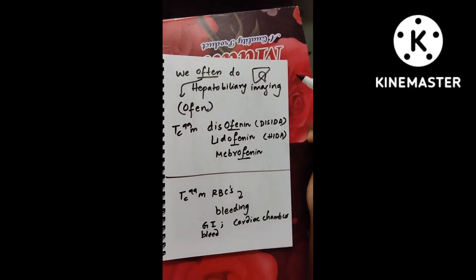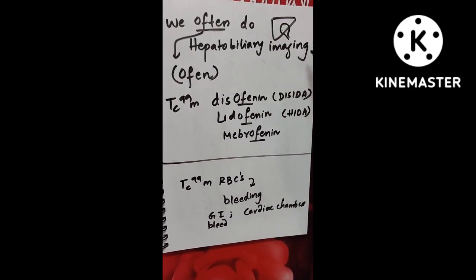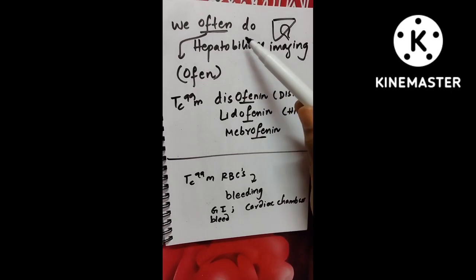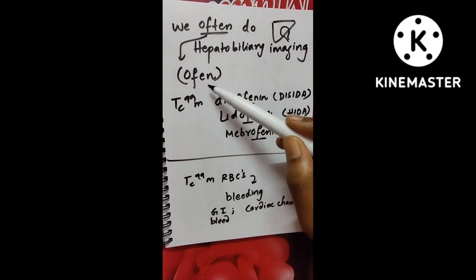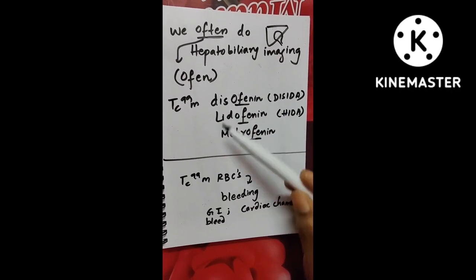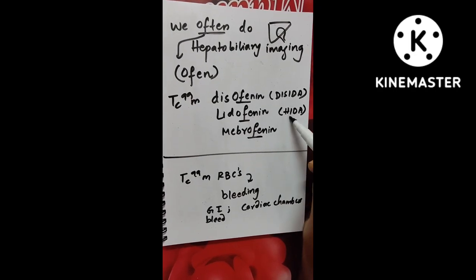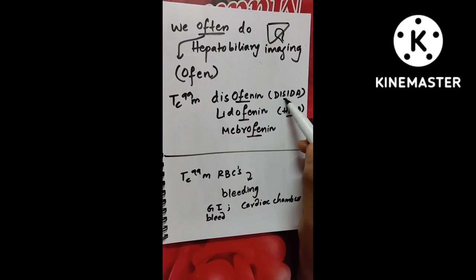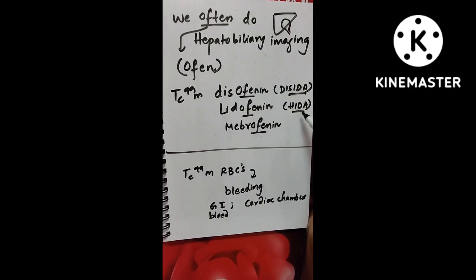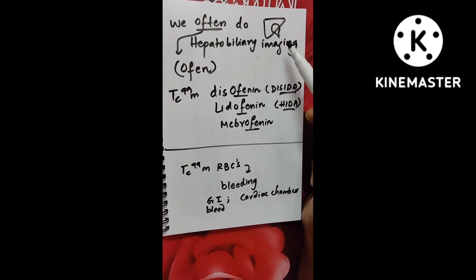Now comes the next one. So in the radiology department, we often do hepatobiliary imaging. So remember like that, hepatobiliary imaging. So often is OFEN, often do OFEN. So disofenine, ofenine and mebrofenine, all OFEN is there. So here, remember it as HIDA scan, we know right? Same like the DISSIDA scan, IDA is common here. HIDA scan, DISSIDA scan is OFEN, we do OFEN, hepatobiliary imaging.